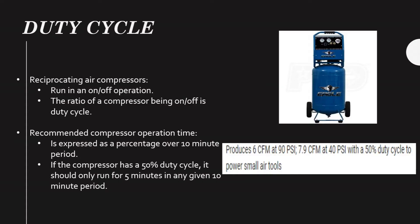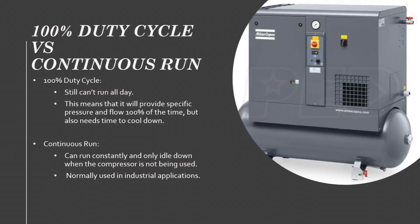The duty cycle is the ratio of the time the compressor is on compared to how long you need to leave it off for it to cool down. It's expressed as a percentage over a 10-minute period. For example, a reciprocating air compressor with a 50% duty cycle should only run for about five minutes out of any given 10-minute period.